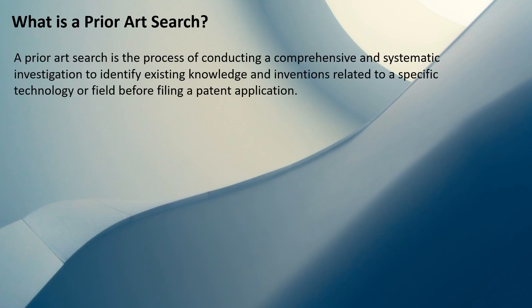Now that we've understood what prior art is, what does prior art search mean? In simpler terms, prior art search is the process of finding prior art. More formally, a prior art search is the process of conducting a comprehensive and systematic investigation to identify existing knowledge and inventions — basically prior art — related to a specific technology or field before filing a patent application.